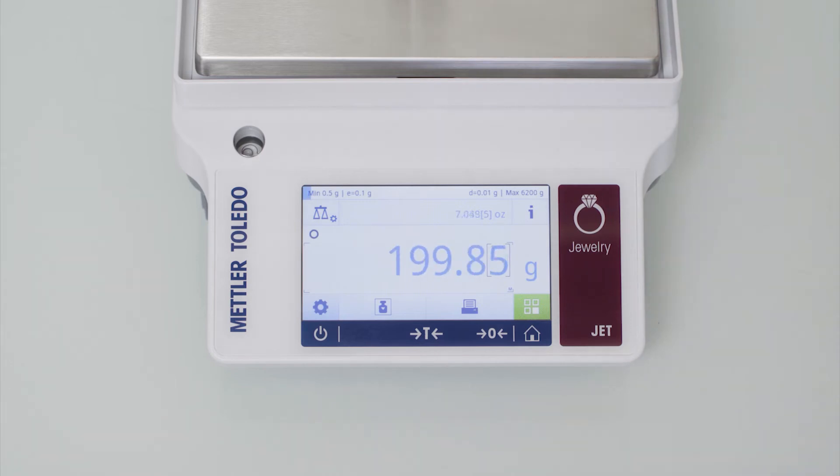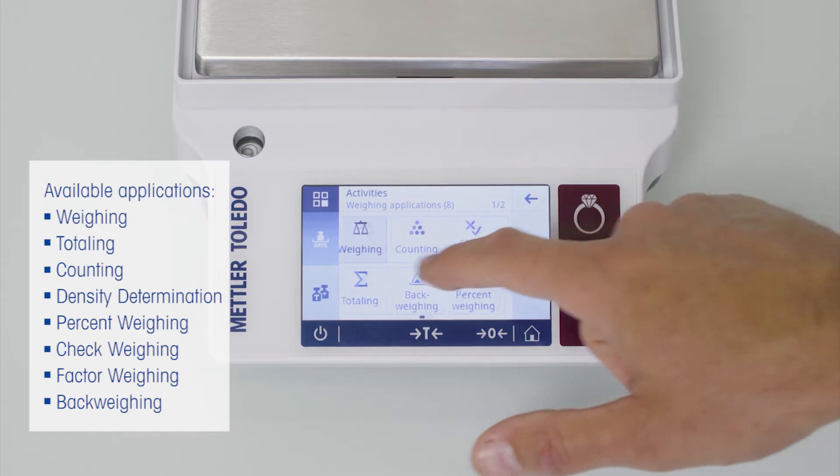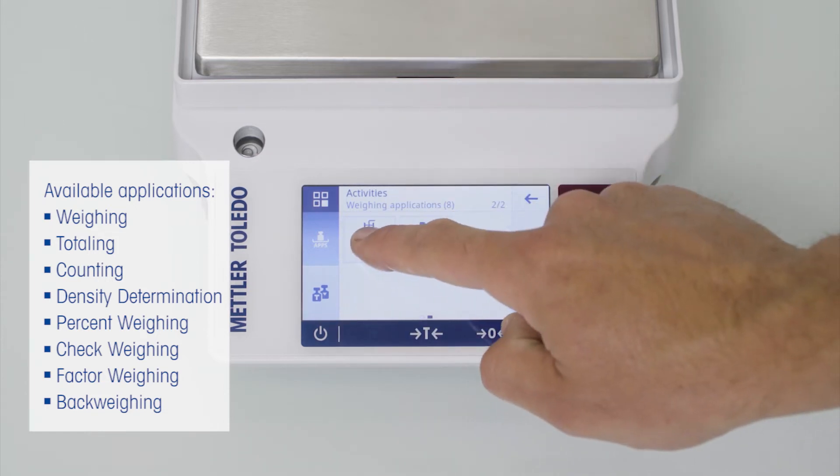The large color touchscreen has bright clear figures that are easy to read even under the dazzling glare of shop lights. The intuitive interface provides fast access to eight built-in applications such as step-by-step instructions for measuring the purity of gold by density.